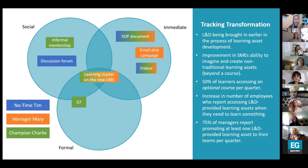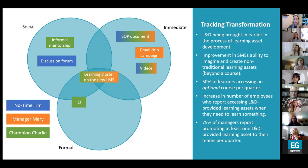For tracking transformation: L&D being brought on earlier in the process of learning asset development is something we'd like to track, along with improvement in the SME's ability to imagine and create non-traditional learning assets — learning assets beyond just a course. We're also tracking 50% of learners accessing an optional course per quarter, increasing the number of employees who report accessing L&D provided learning assets when they need to learn something via a survey, and having 75% of managers report promoting at least one L&D provided learning asset to their teams per quarter.